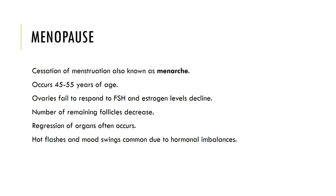Menopause is the cessation of menstruation and occurs generally at ages 45 to 55 years. The ovaries fail to respond to FSH and estrogen levels decline. The number of remaining follicles decreases, regression of organs often occurs, and hot flashes and mood swings are common due to hormonal imbalances.